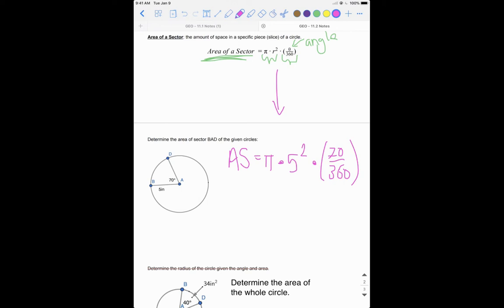You should get 15.27, 15.27. And let's think about what our units should be. We're talking about area, so they've got to be squared. We're given inches, so we've got to have inches squared. So that's your area of a sector.